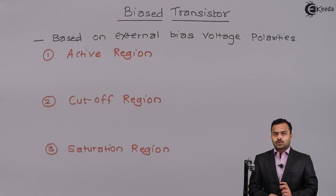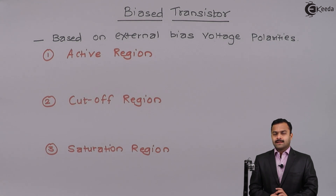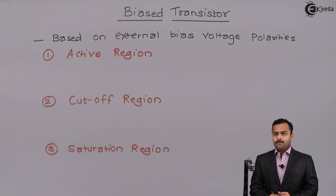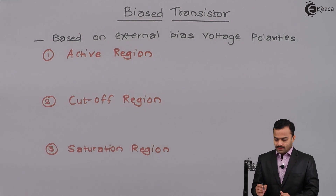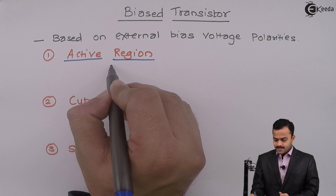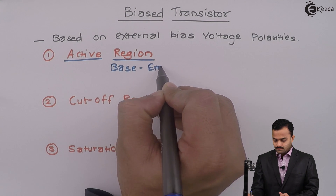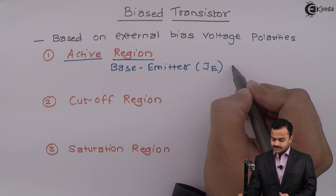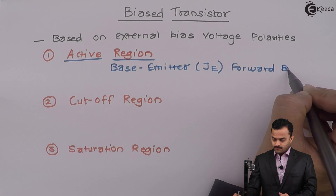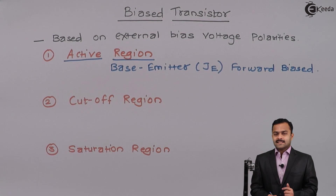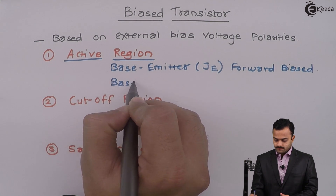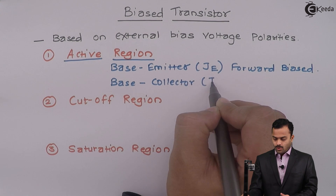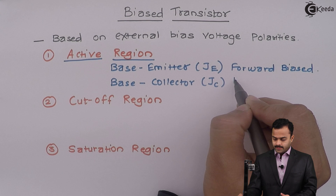Now there are two junctions in a transistor: the emitter-base junction and the collector-base junction. These two junctions need to be properly biased. In the active region, the base-emitter junction, called JE, is forward biased, and the base-collector junction, called JC, is reverse biased.